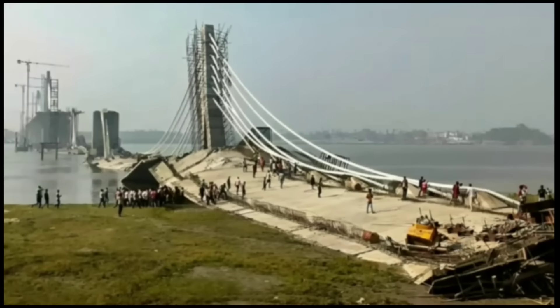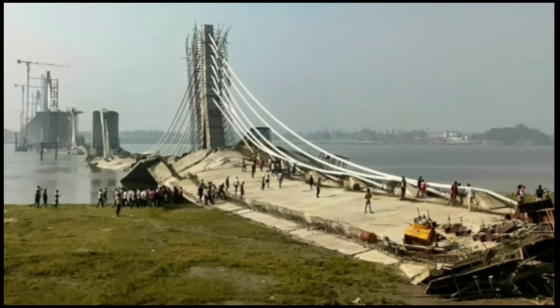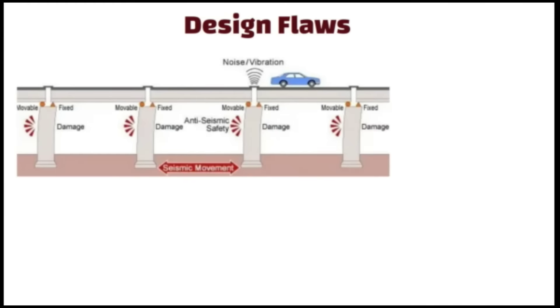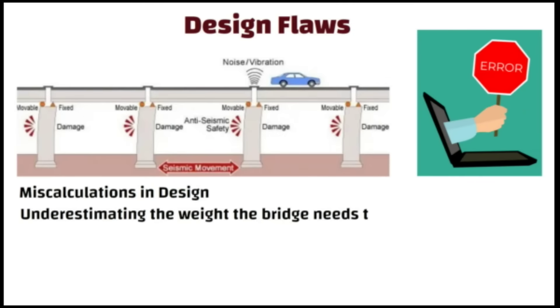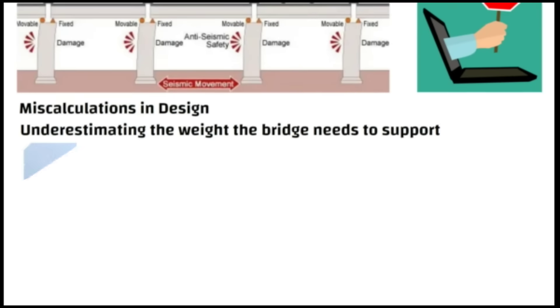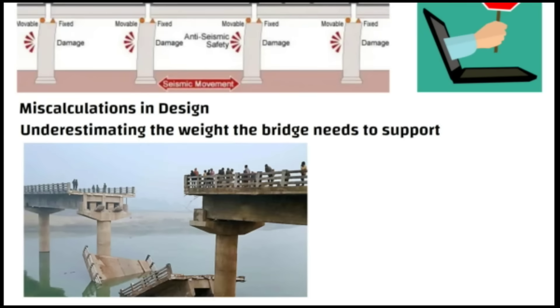Some of the common factors that contribute to bridge collapses include design flaws. Bridges are typically designed to withstand certain loads and conditions. If there are errors or miscalculations in the design, such as underestimating the weight the bridge needs to support, it can lead to structural weaknesses and potential collapse.